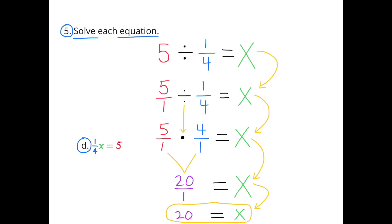D: 1 fourth x equals 5. That can be rewritten as 5 divided by 1 fourth equals x, which is the same as 5 over 1 divided by 1 fourth equals x. Multiplying by the reciprocal of 1 fourth: 5 over 1 times 4 over 1 equals x, which is 20 over 1. So x equals 20.